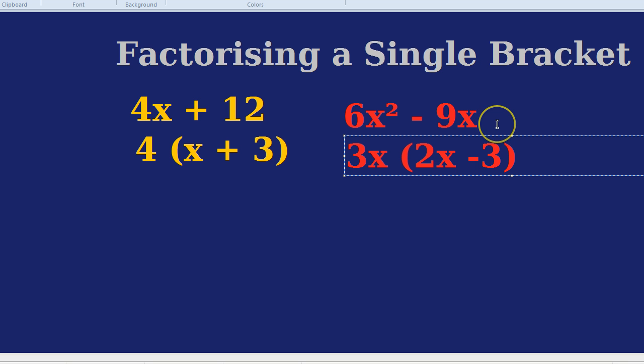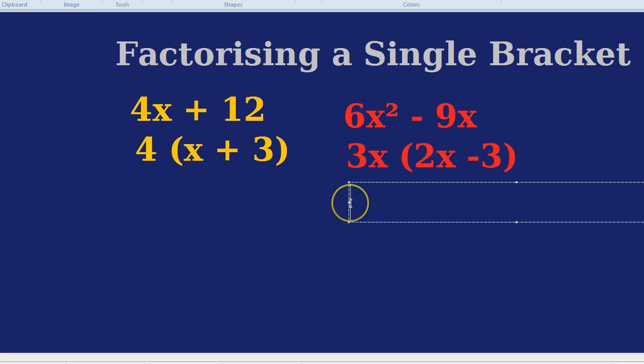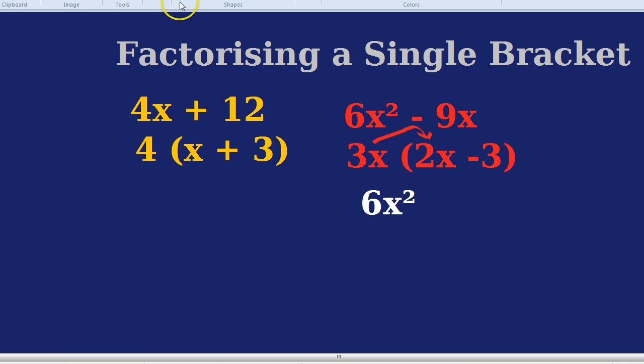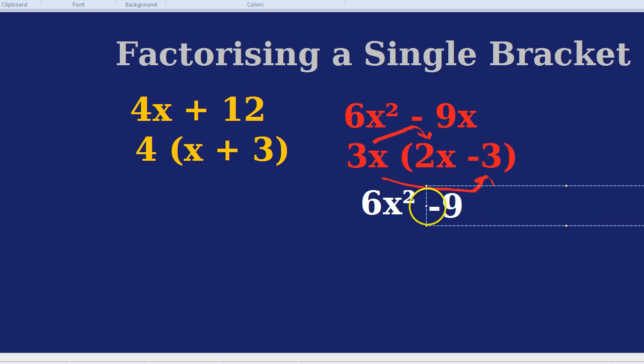You can always check that it works if you multiply the brackets out again. You don't really need to do that too often. But just to show you for this example, 3x times by 2x is indeed 6x squared. And 3x times by minus 3 would indeed be minus 9x. So we know for sure we've factorized the expression correctly. Because that's what we started with. You don't need to do that step to check, only if you really want to double check.